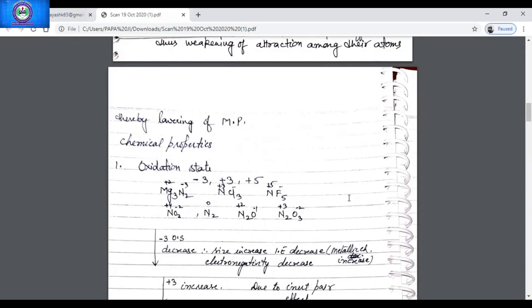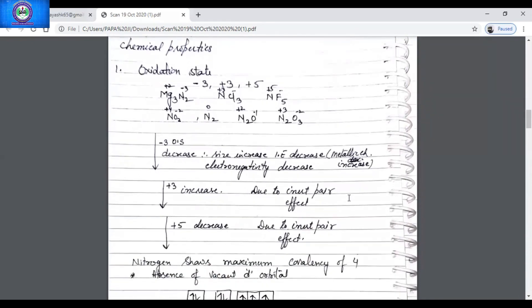What is the trend of oxidation state when we go down in the group? The trend of minus 3 oxidation state decreases. Why? It's due to the increase in size, ionization enthalpy decreases, metallic character increases, and secondly the electronegativity also decreases. Plus 5 oxidation state as we go down in a group increases due to the inert pair effect. Inert pair effect means reluctance of the s electrons to be available for bonding as compared to the p electrons due to their greater penetration in the nucleus. The trend of plus 5 oxidation state also decreases. The reason is same, that is due to the inert pair effect.